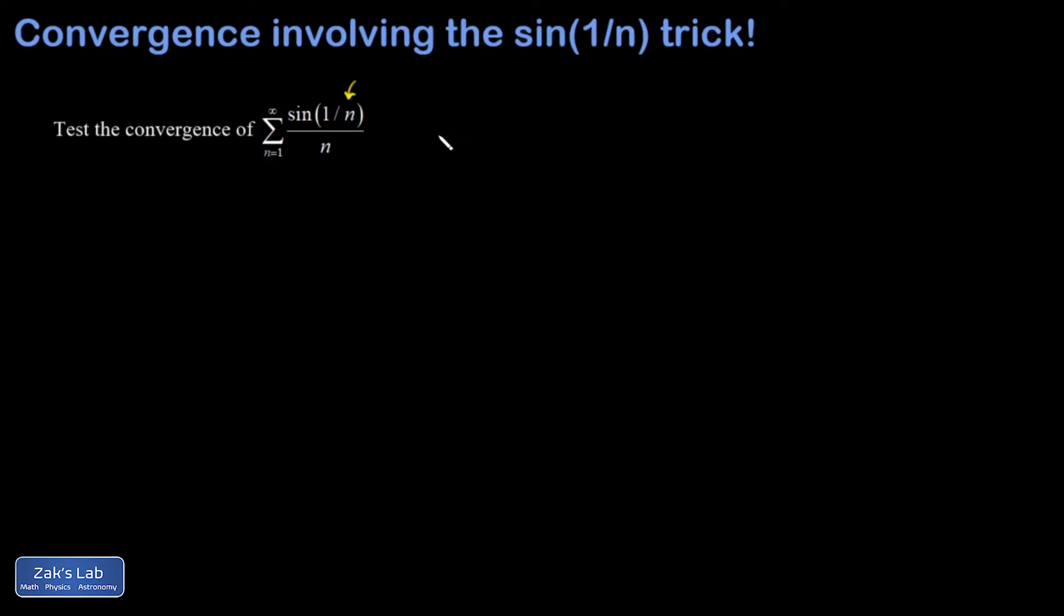So my long-term goal here is to hopefully compare to 1 over n squared, which is only going to work if we can show that sine of 1 over n is less than 1 over n. And that's the really difficult thing about this problem.